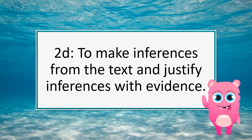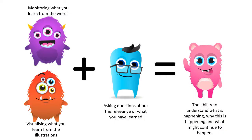So we're still continuing with inferences today and we're going to try to justify inferences with evidence. The difference about today is that we will be analysing the front cover. When we analyse the front cover, we need to use a couple of our reading monsters from the Super 6.